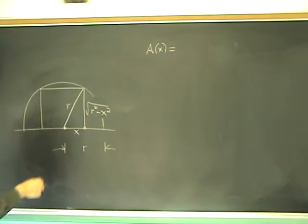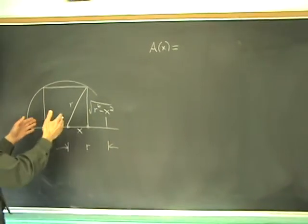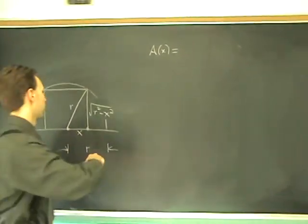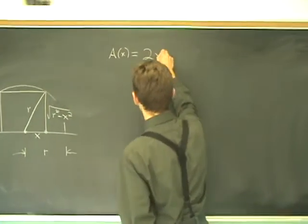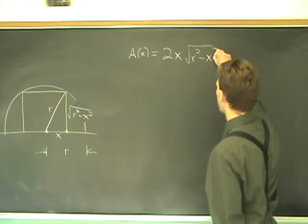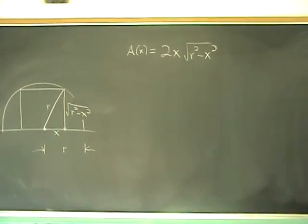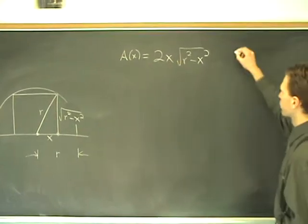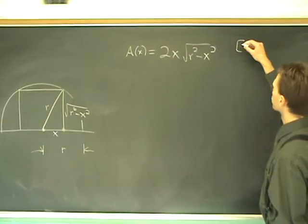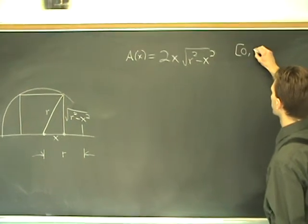And once we have the sides of the rectangle, it's all over. Because the area is now just the base times the height. And the base is 2X. And the height is radical R squared minus X squared. We want to optimize this function. Find its maximal value. On the interval, X can be as small as 0 and X can be as large as R.